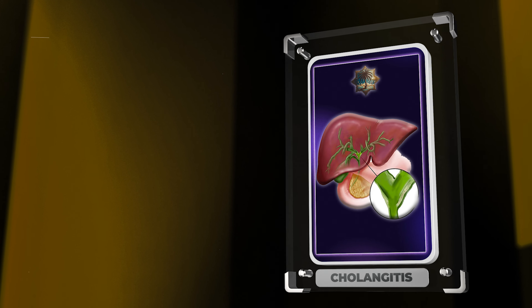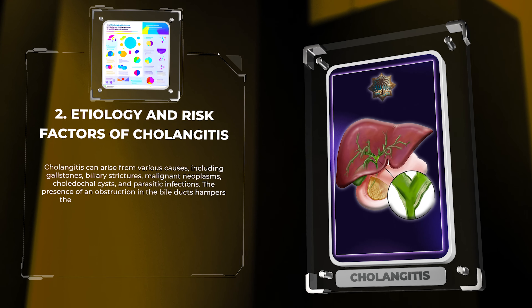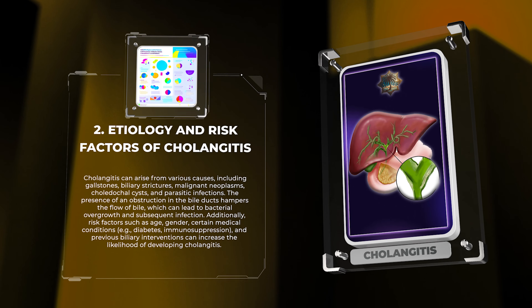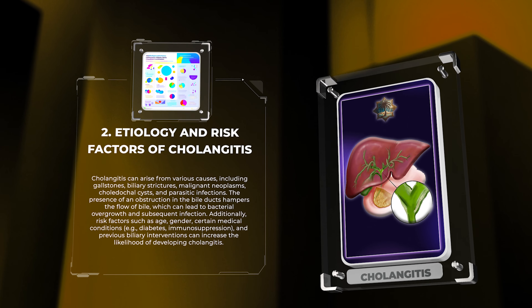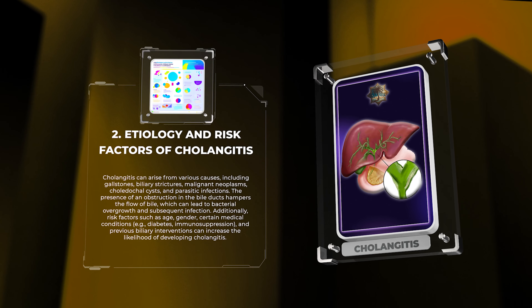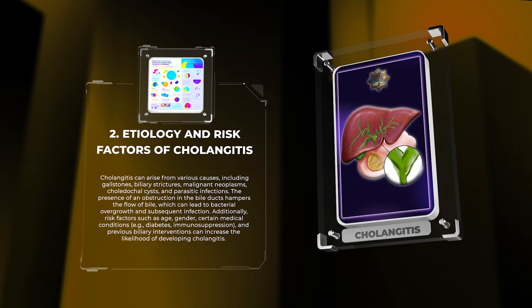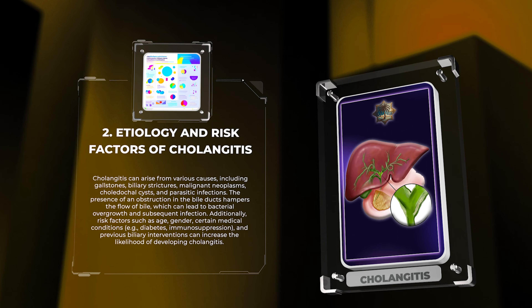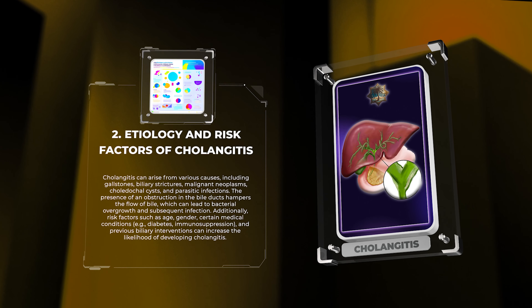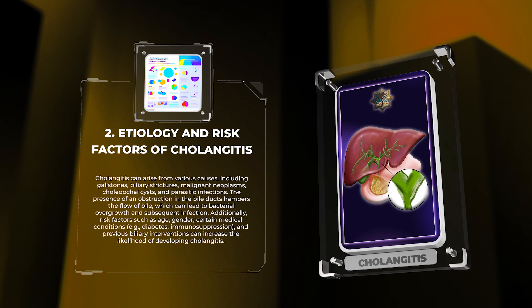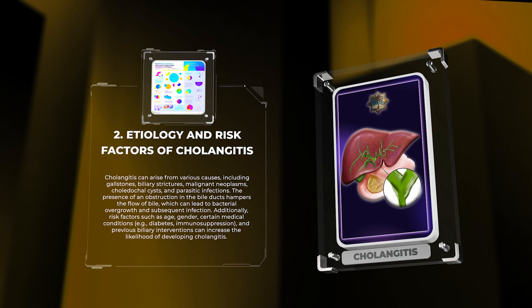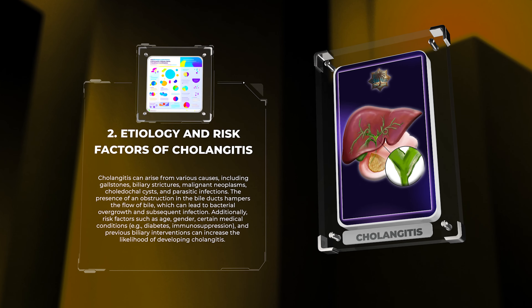Cholangitis can arise from various causes, including gallstones, biliary strictures, malignant neoplasms, choledocal cysts, and parasitic infections. The presence of an obstruction in the bile ducts hampers the flow of bile, which can lead to bacterial overgrowth and subsequent infection. Additionally, risk factors such as age, gender, certain medical conditions — for example, diabetes, immunosuppression — and previous biliary interventions can increase the likelihood of developing cholangitis.